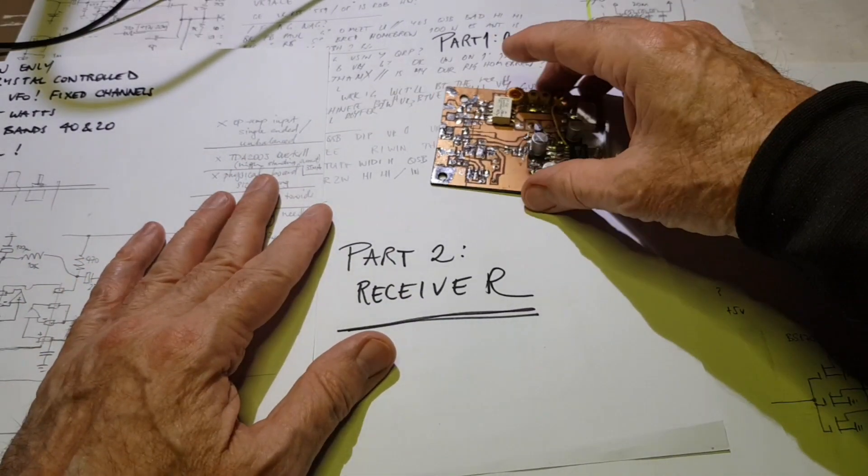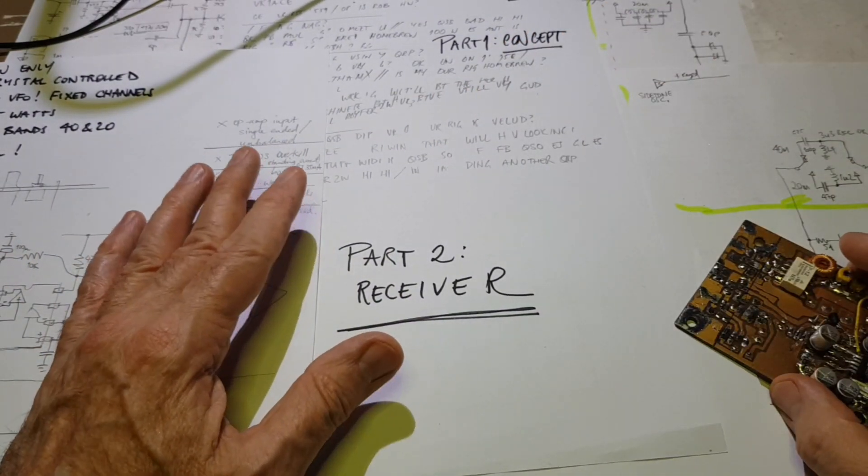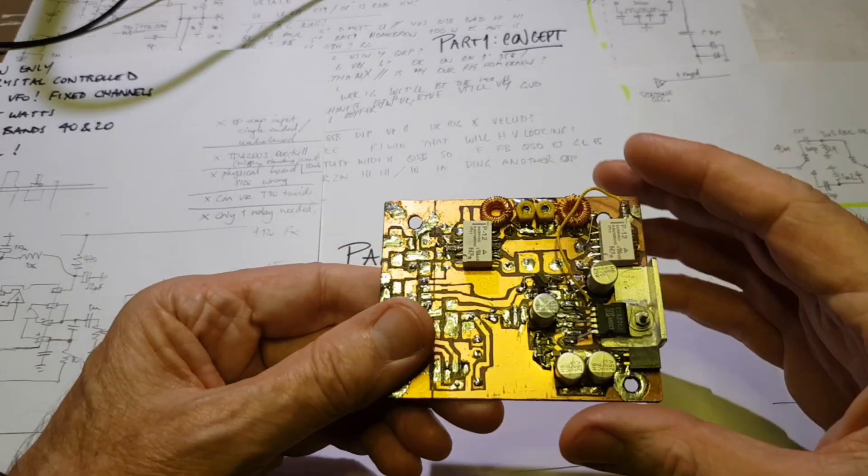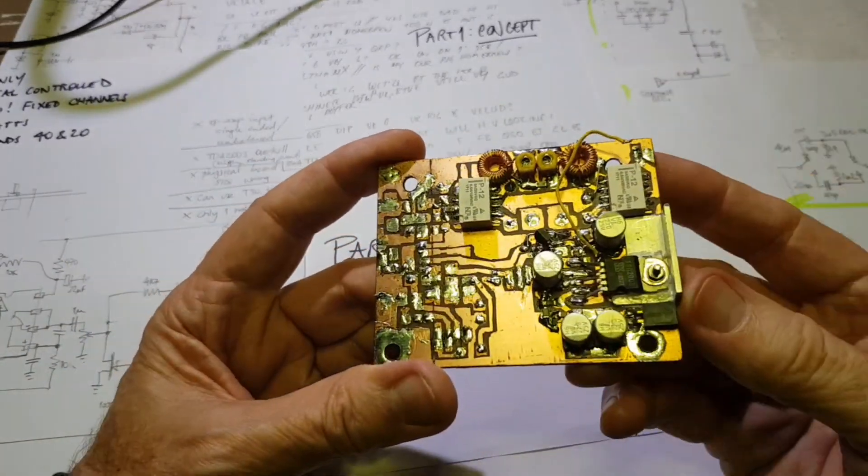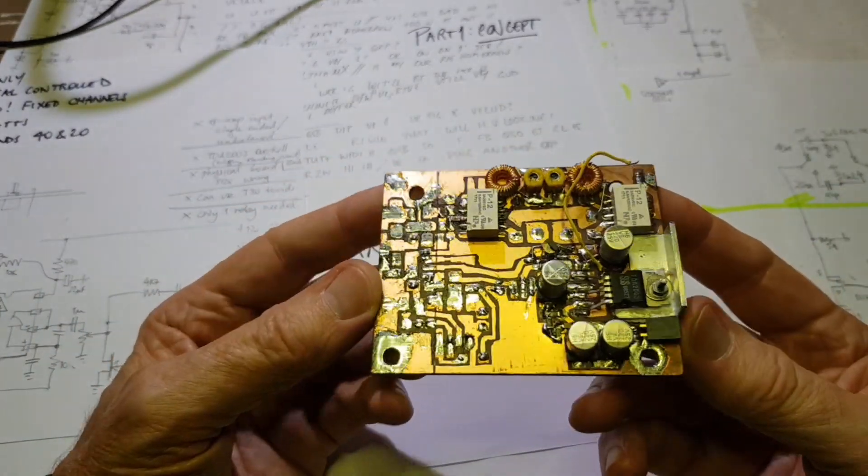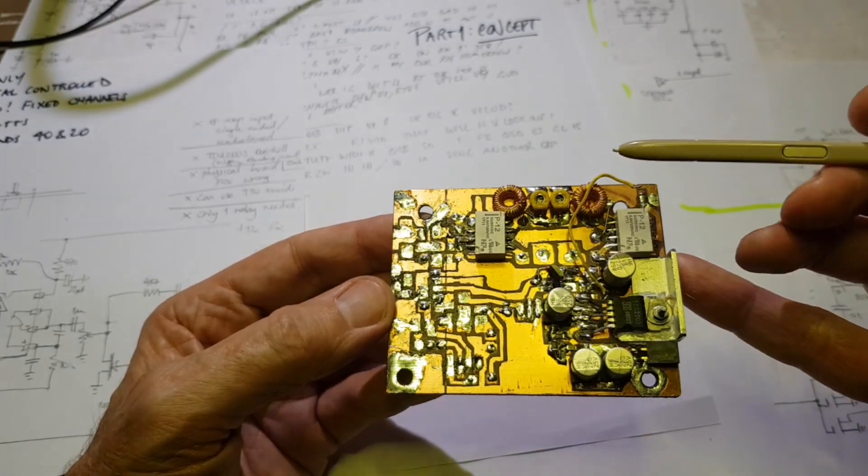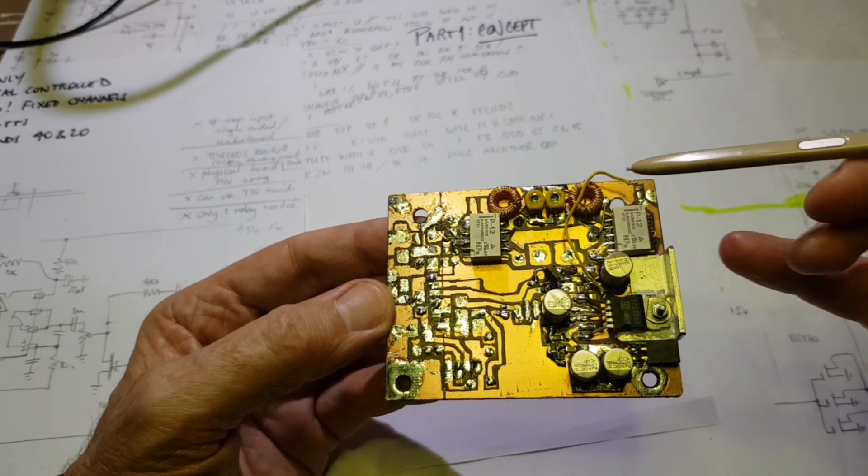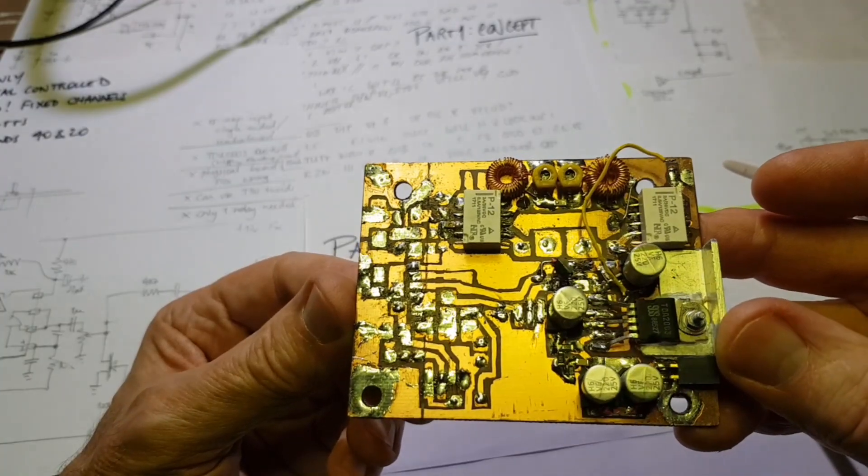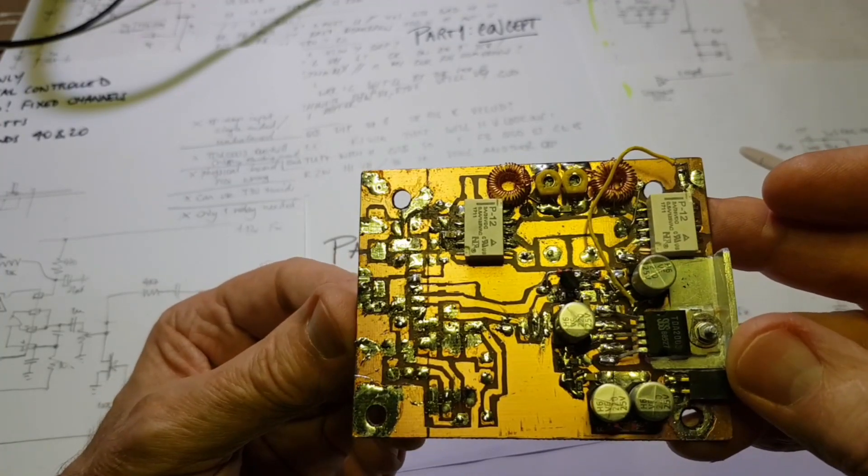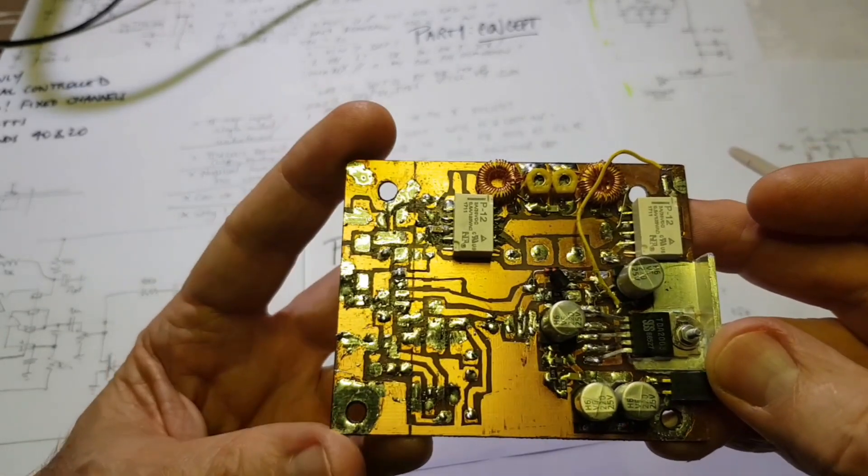Those are the objectives for this rig. In this video I want to cover the receiver. In the last video I showed this board here from an old project. Looking at it, this really has a lot of what you need for a direct conversion receiver.